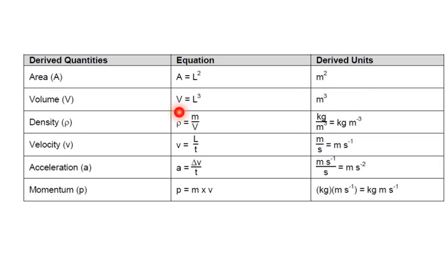Density, which is mass over volume. Well, that's kilograms divided by volume, so then we end up with kg m to the minus 3.